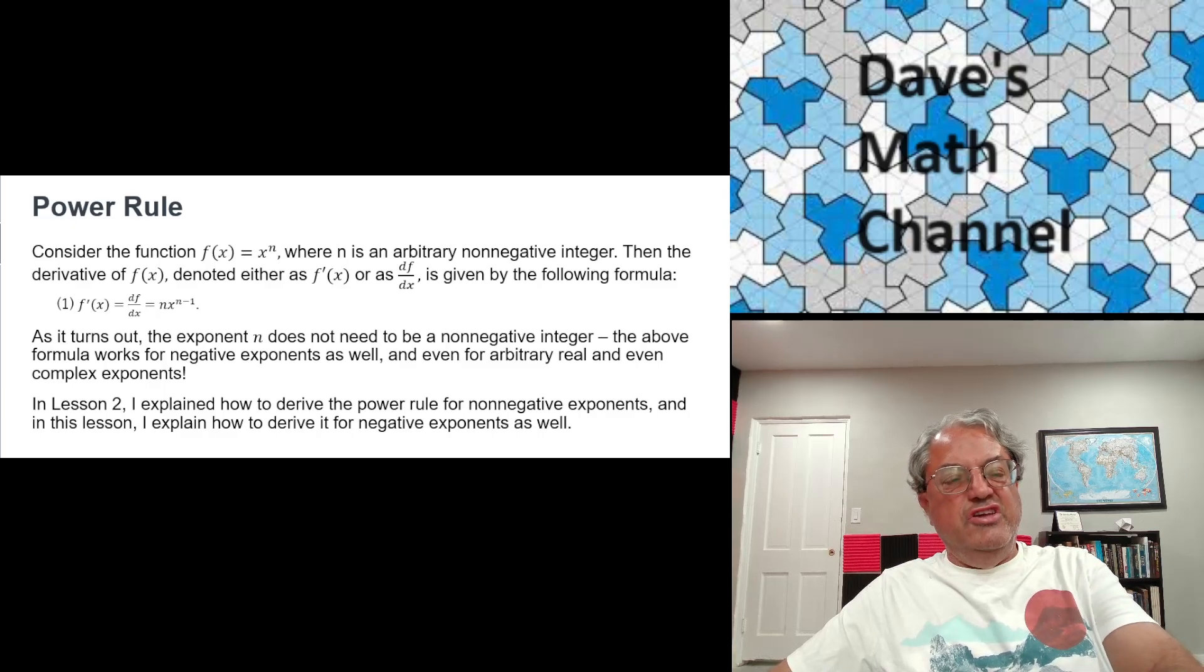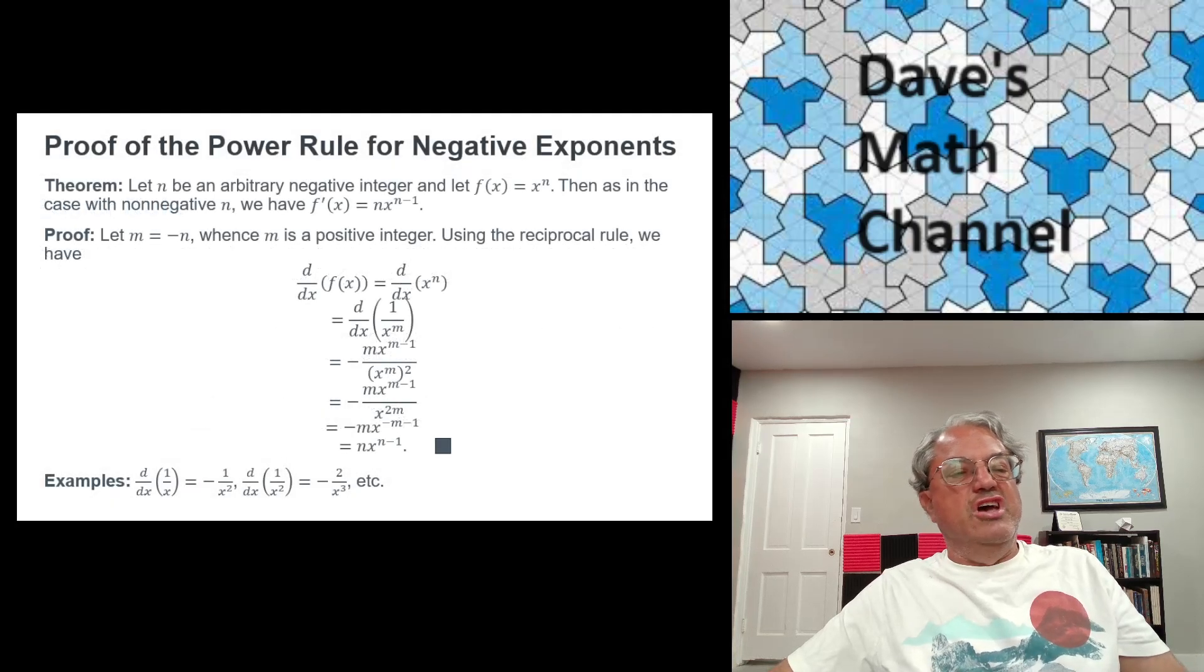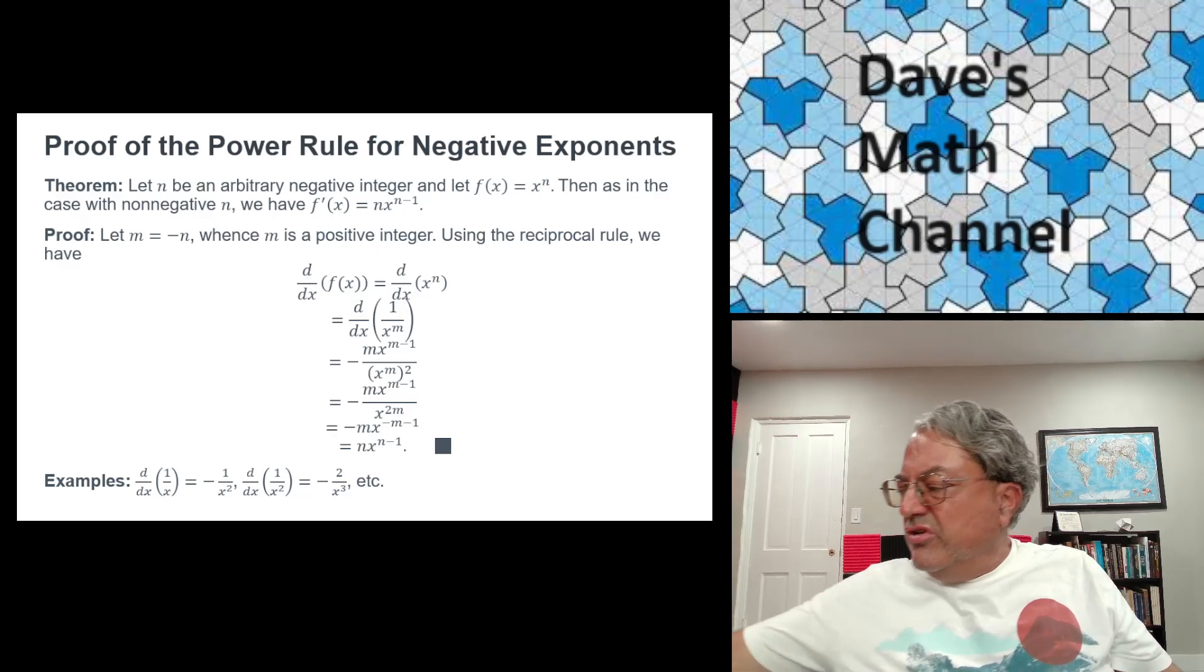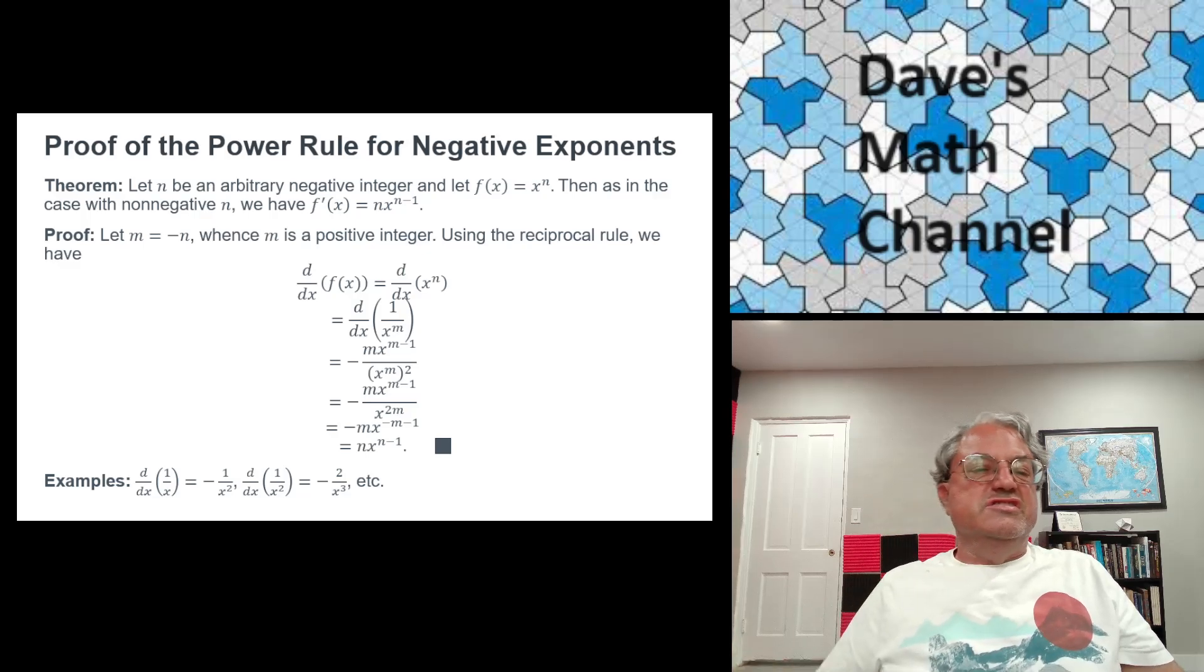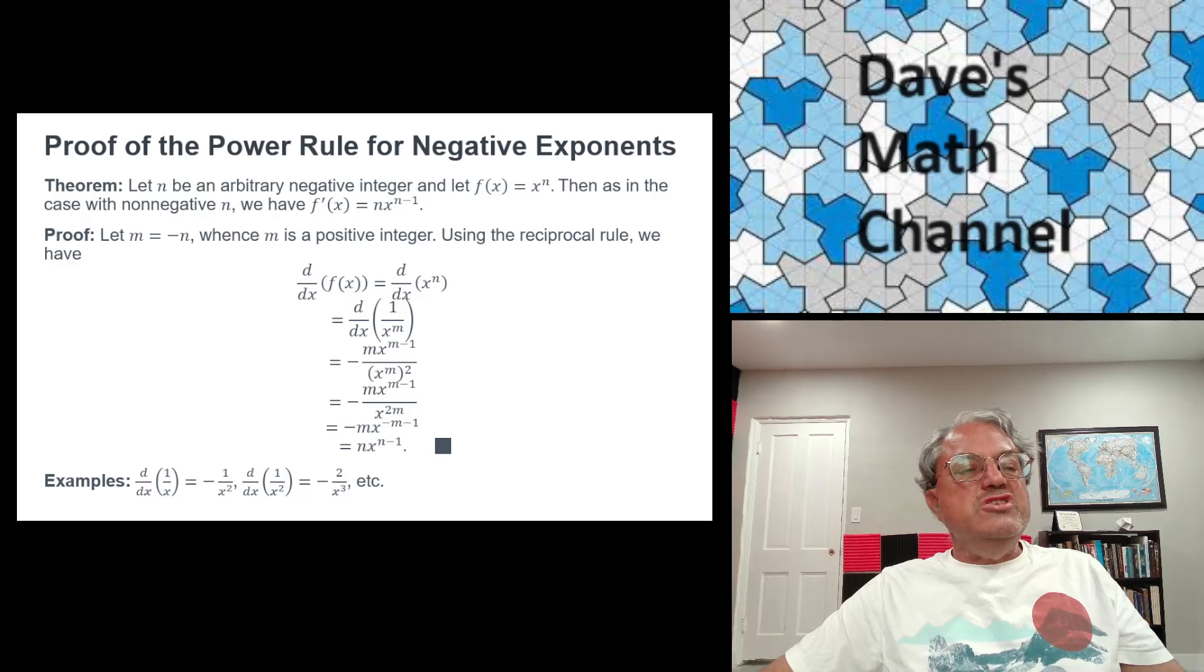How do we prove it for negative exponents? Using the machinery we have now, it's pretty simple. We just apply the reciprocal rule, which is a special case of the quotient rule. Here's the derivation: assume that n is a negative integer. We'll call n equal to -m. It's easier to work with positive integers, so we write m as the negative of n, which is positive.